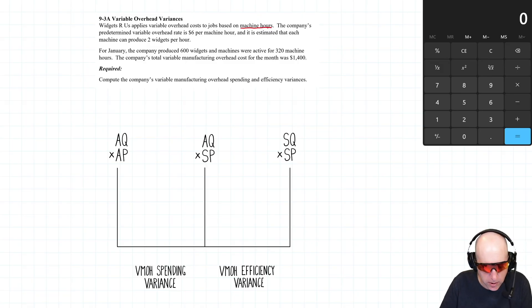For January, the company produced 600 widgets and machines were active for 320 machine hours. The company's total variable overhead cost was fourteen hundred dollars. I think we've got everything we need.